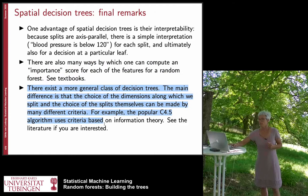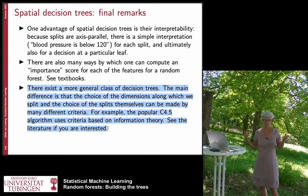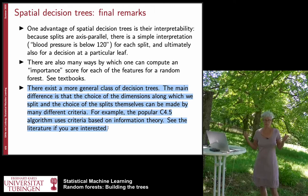I've only shown the spatial partitioning tree as one example. There are many others — a very popular one is the C4.5 algorithm, which orders variables according to an information-theoretic quantity. The most informative variables end up at the top of the tree, and the less important variables at the bottom.